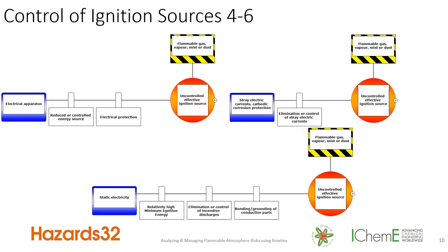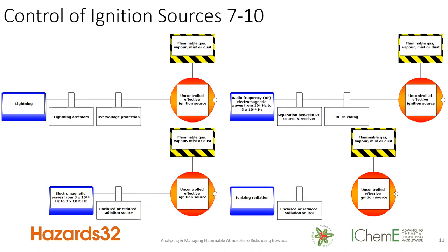Going through the subsequent sources — electrical apparatus, electrostatic influences — how are we going to prevent them from becoming credible, competent, effective ignition sources? They have to have the appropriate energy in order to ignite that flammable atmosphere. Continuing through lightning, electromagnetic waves, other radiation — all taken from clause six of EN 1127.